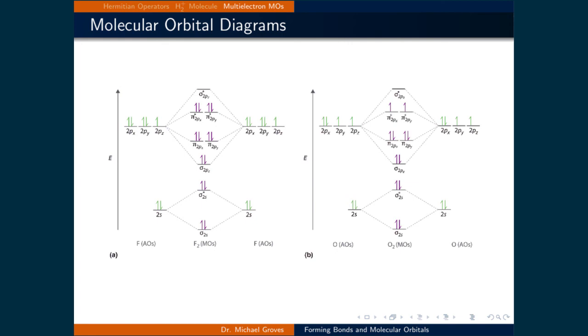and the two px, y, and z orbitals make bonding and antibonding sigma and pi orbitals. These molecular orbitals are filled with electrons from both atoms, following the Pauli exclusion principle and Hund's rules.